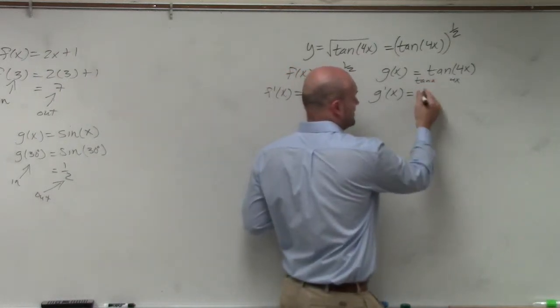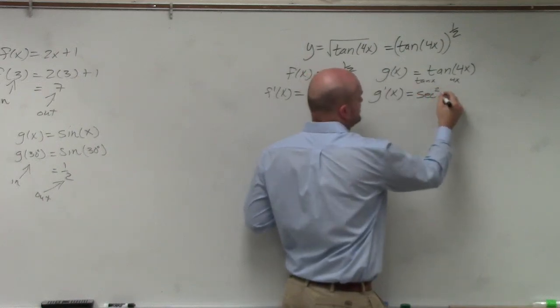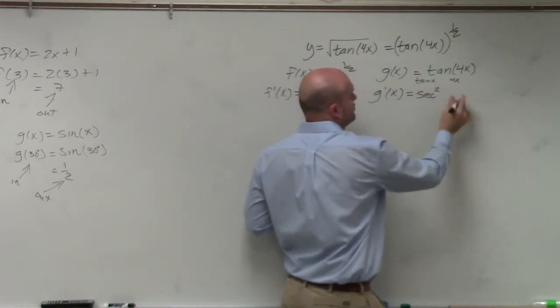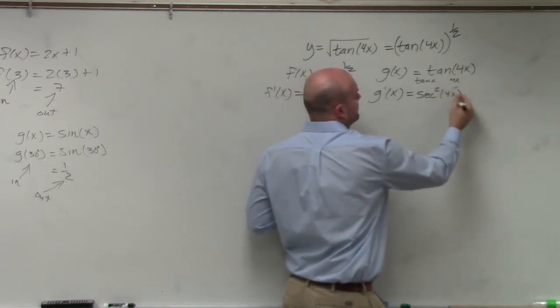I'm going to get the derivative of my outside function is secant squared of x, squared of my function, which is 4x, and then times 4.